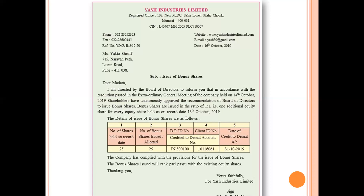EOGM stands for Extraordinary General Meeting — this meeting is held to discuss only special purpose or urgent matters. Shareholders basically conduct two meetings: one is the Annual General Meeting and the second is the Extraordinary General Meeting. In this EOGM, a resolution was passed for declaration of bonus shares. So Miss Yukta has been informed that in the EOGM held on 14th October, shareholders unanimously approved the recommendation of the board of directors to issue bonus shares in the ratio of 1:1 — meaning one bonus equity share for every equity share already held.